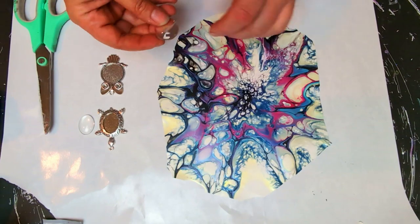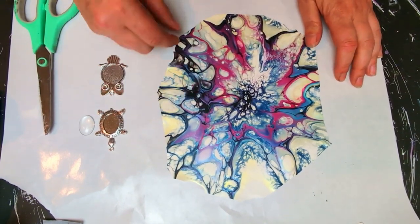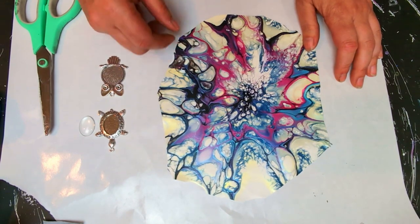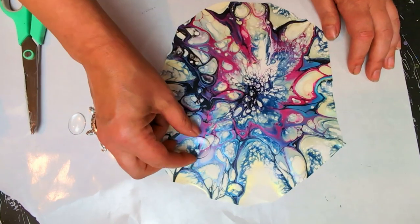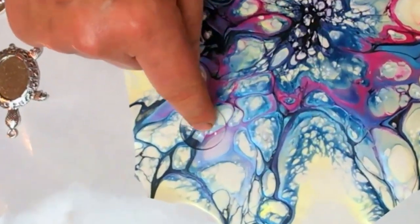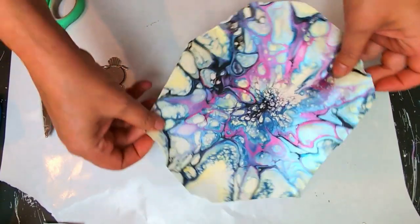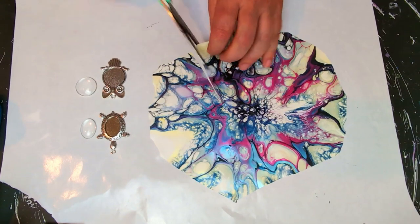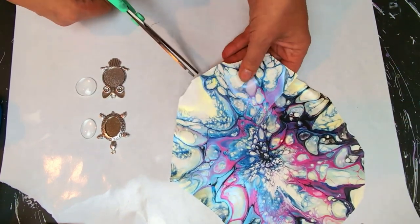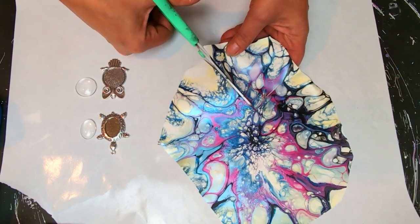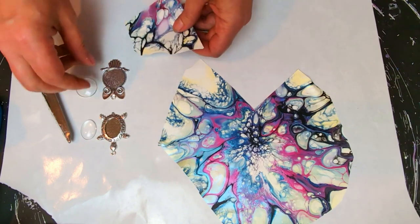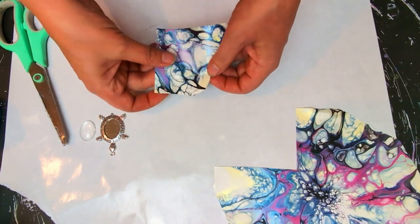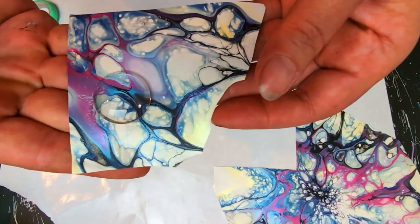So what you want to do is take your cabochon and find the spot that you want. So I am thinking I want that one's pretty. I think I want right there. So what I do is I will take my scissors and I will cut a square piece or whatever piece out of there, so I have a nice flat surface. And this is the piece I want to use for this one.